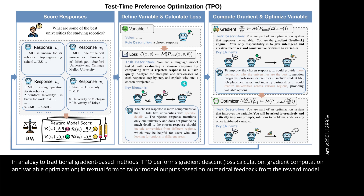This visualization explains everything. We have test time preference optimization built up like our classical numerical calculation — variables, loss function, compute the gradient, optimize the variable, then start all over again. But now there is only one numerical calculation: the reward model score. We start with a question — what are some of the best universities in the world for studying robotics? — and we get four responses from our agent. The reward model evaluates them and gives a score.